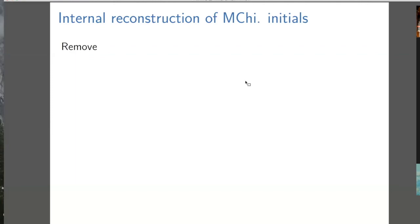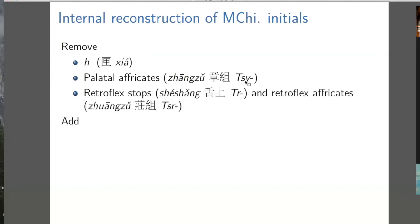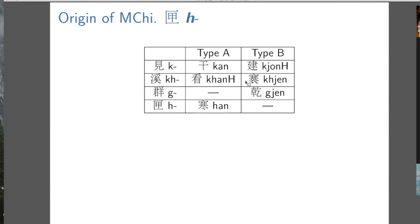For internal reconstruction, we will remove some things: H and the palatal affricates and the retroflex stops, and we will add labiovelars. We notice that voiceless velar occurs in both type A and type B syllables, that voiceless aspirate velar occurs in both type A and type B syllables, but the voiced velar only occurs in type B.